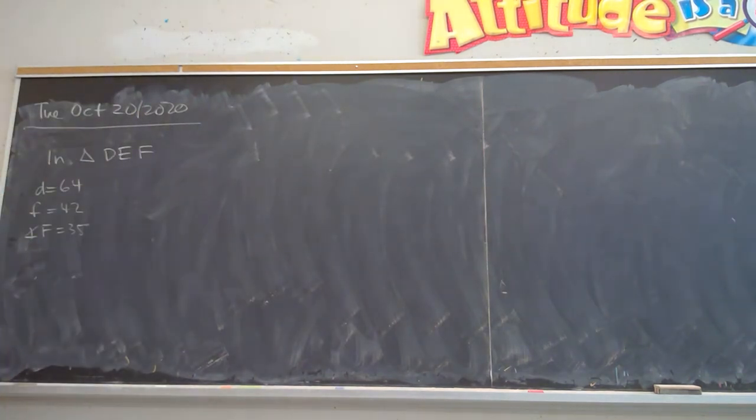Good morning ladies and welcome back. It's Mr. Chen. We're looking at the ambiguous case, and this one I think is from the PowerPoint. It's all ready to do. In Triangle DEF, we have side D is 64 units, side F is 42 units, and angle F is 35 degrees.